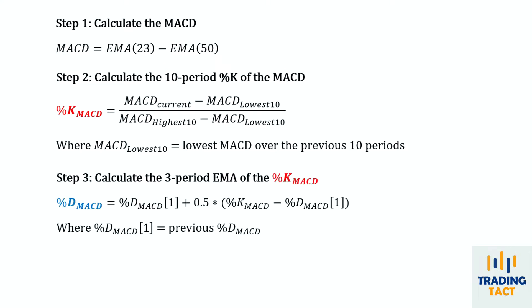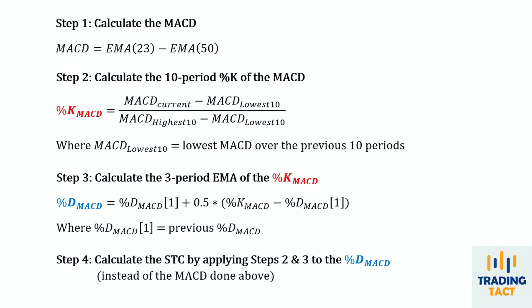We calculate the 3 period EMA of the %K to get the %D value. Finally, we get the Schaff Trend Cycle by applying steps 2 and 3 again, but this time to the %D instead of the MACD. The trend cycle thus combines the benefits of trend and momentum indicators.